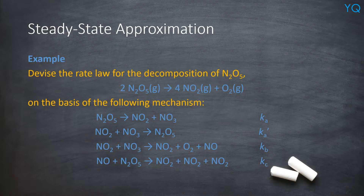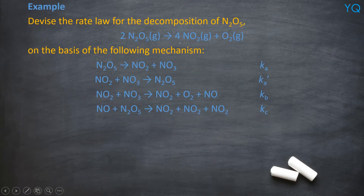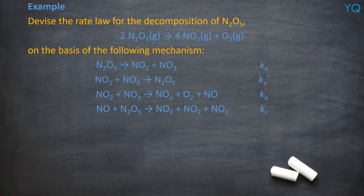To better understand how to apply this, let's look at an example. Devise the rate law for the decomposition of N2O5 according to this equation, based on the following mechanism. First step: find the intermediates. Intermediates are species that are neither reactants nor products. The reactants are N2O5 and products are N2O4 and O2. So NO3 is an intermediate — let's mark out all the NO3s.